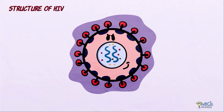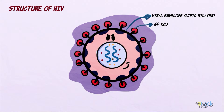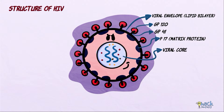The outermost layer is the viral envelope or the lipid bilayer, consisting of surface viral glycoproteins called GP120 and GP41. Immediately beneath the viral envelope is a matrix protein called P17.